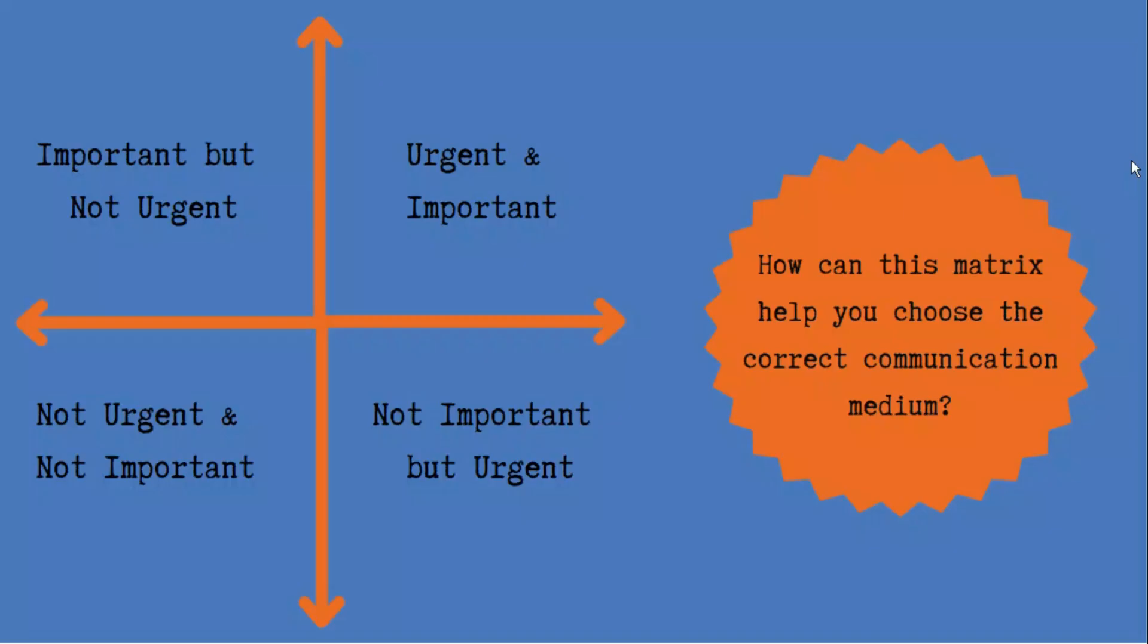Now that we have looked at some of the ways we communicate, let's think about how we choose the most appropriate. One of my favorite things to use is this urgent important matrix. In certain instances, it will help determine what medium you should choose. Think for a moment how this can assist you in selecting the appropriate communication.